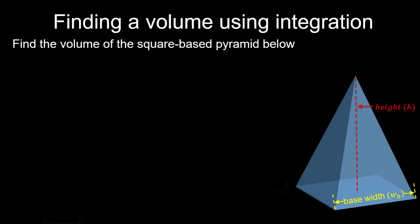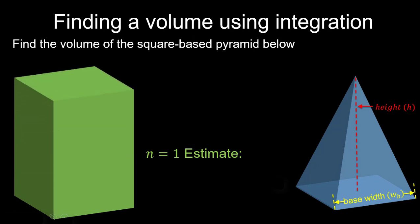To start, let's make a really basic estimate — our n equals 1 estimate. All we're going to do is approximate the pyramid as one single rectangular solid, shown here in green. This has the same base width and same height as our pyramid, so it's simply the base area w sub b squared times our height h. So our n equals 1 estimate is w sub b squared times h.